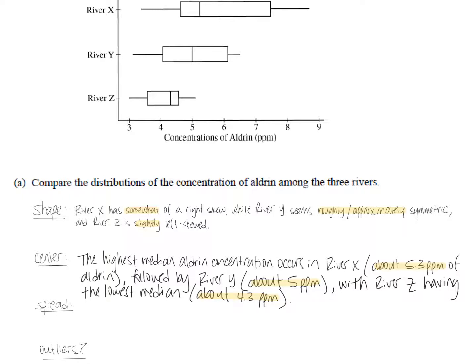And so again, I'm comparing the three, so I have the highest one, the middle one, the lowest one. I'm not just saying river X's median is this, river Y's median is this. You will lose points for that. You have to compare them. So the highest median concentration occurs in river X. It's also very important that whenever possible, if you can come up with a number to support why you're saying it's the highest, that is very important to include. So about 5.3, I don't know exactly. That's an estimate, that's why I put the word about. And then labeling ppm, parts per million, because that's the units that this question is talking about. Followed by river Y at about 5, and then river Z has the lowest median of the three at about 4.3 parts per million.